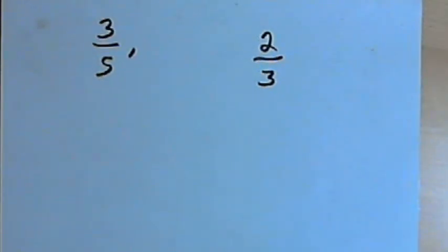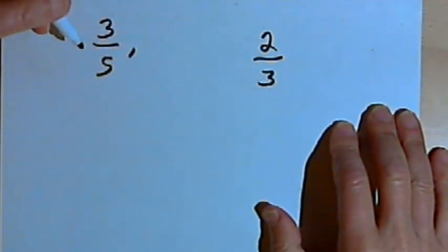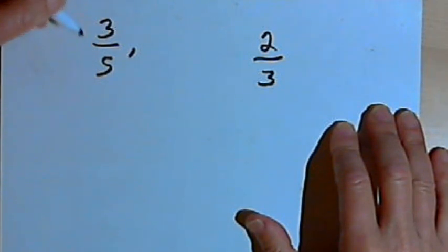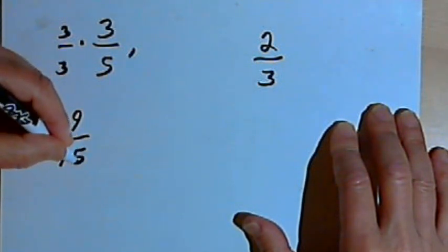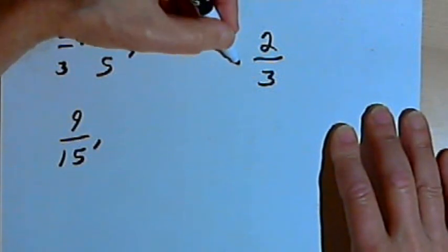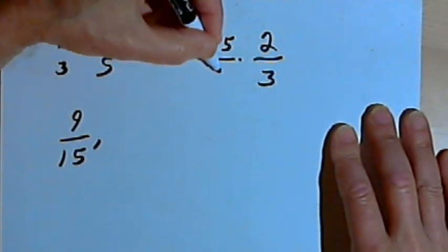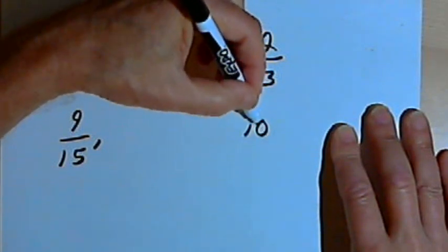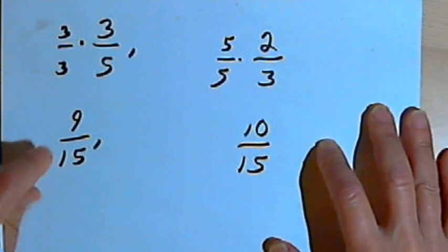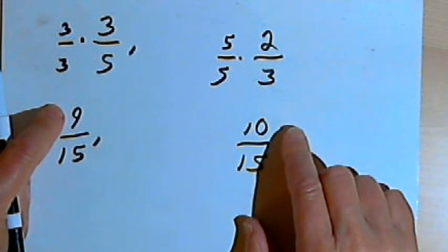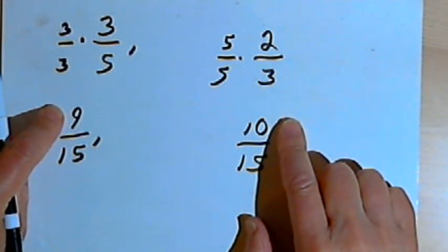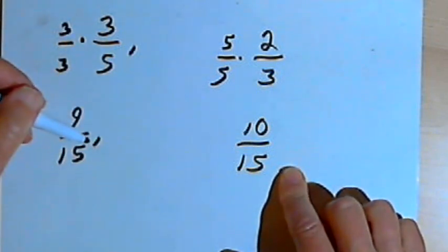So this time I've got 3 over 5 and 2 over 3. Once again the common denominator is going to be 15, and I want to give them both the same denominator. So I'll multiply 3 over 5 by 3 over 3, and that will turn that into 9 over 15. And I'll multiply the 2 over 3 by 5 over 5, and that's going to turn that into 10 over 15. Well, there are no fractions with denominators of 15 that I can slip in between 9 over 15 and 10 over 15.